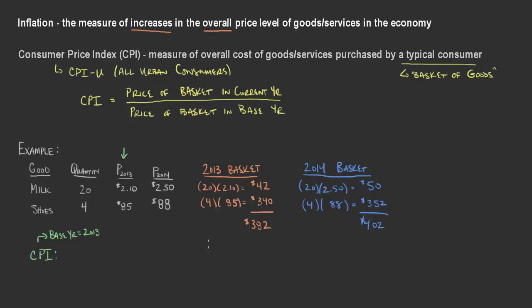For 2013, the base year CPI is always 100 — it would be 382 divided by 382, times 100, which equals 100. For the 2014 basket, it's the price of the basket in 2014 divided by the price in the base year 2013: 402 divided by 382 equals 1.052, times 100, which works out to be 105.2.